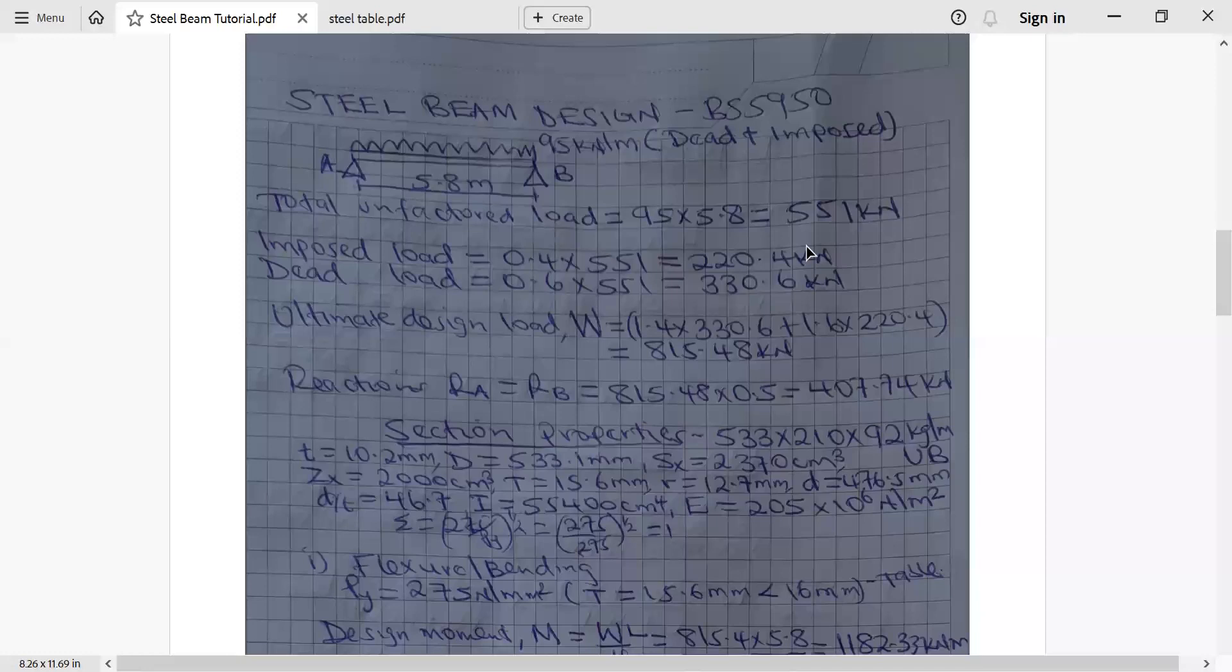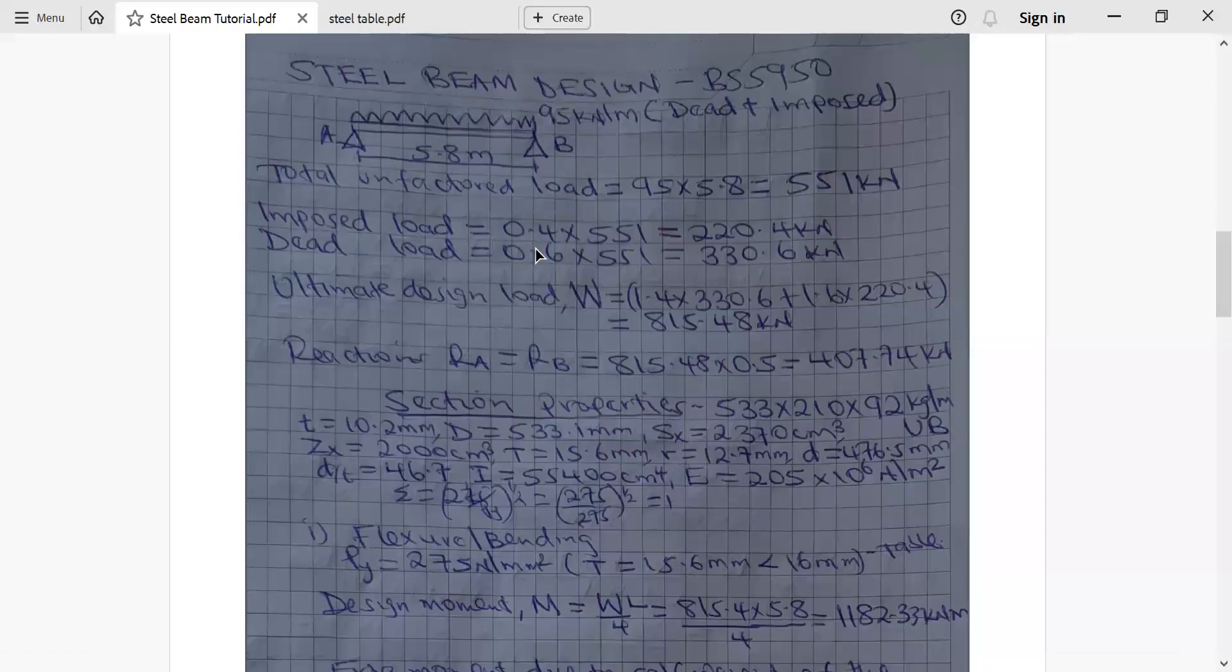Step number one, we'll have to sketch our beam. This is our beam with the load UDL consisting of dead and imposed load. Then we have to calculate total unfactored load will be given by 95 multiplied by total length 5.8 which is 551 kilonewton.